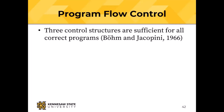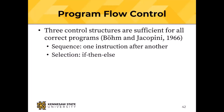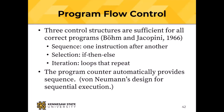Boehm and Jacobini said the three control structures you need are: sequence — do one instruction after another; selection — if-then-else; and iteration — loops that repeat. If you have those three things, they are sufficient for all correct programs.